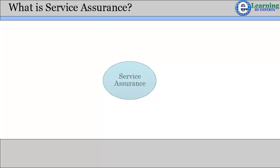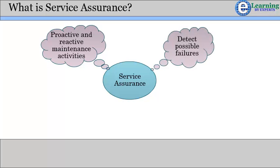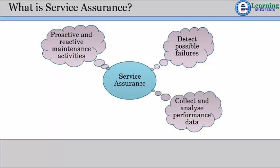Service Assurance is a vertical end-to-end process grouping responsible for the execution of proactive and reactive maintenance activities to ensure that services provided to customers are continuously available and performing to SLA or COAS performance levels. It performs continuous resource status and performance monitoring to proactively detect possible failures. It collects performance data and analyzes them to identify potential problems and resolve them without impact to the customer. This process manages the SLAs and reports service performance to the customer.